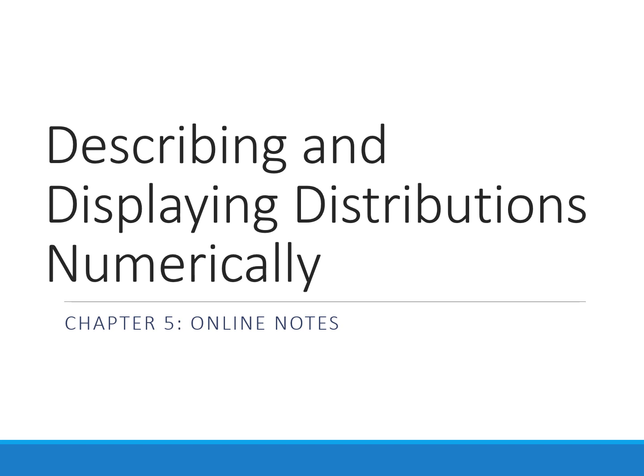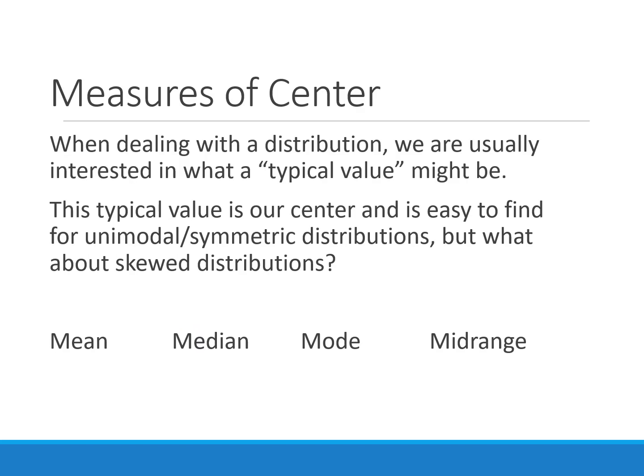Chapter five: describing and displaying distributions numerically. This chapter focuses on quantitative graphs, as opposed to chapter three, which was on categorical. In the last chapter, we talked about describing distributions with the acronym SOCS: shape, outlier, center, spread.